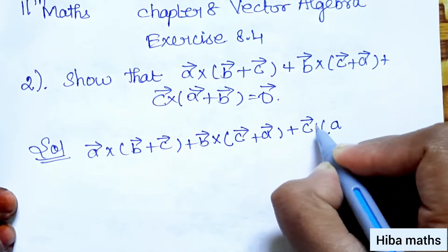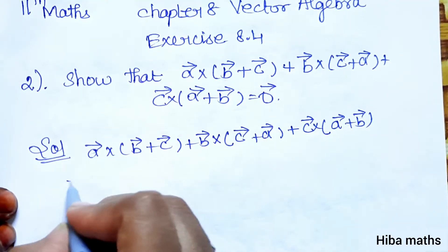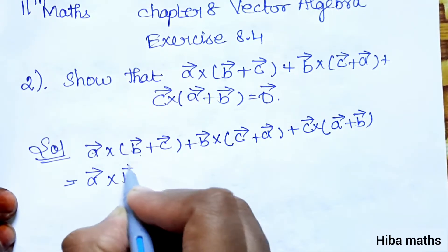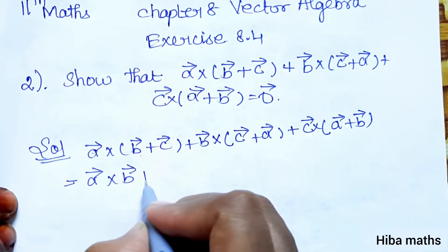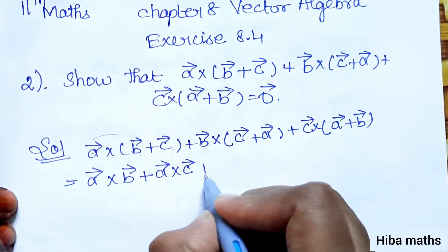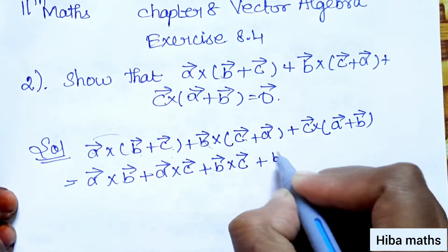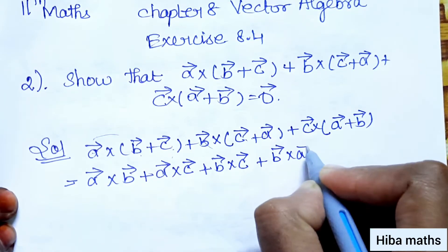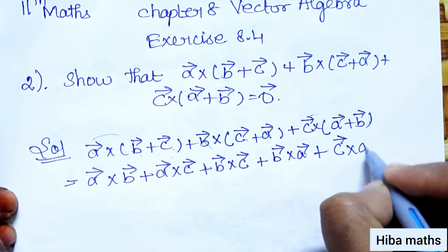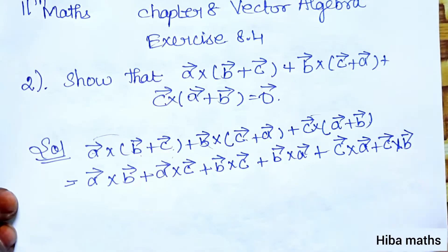This is the LHS. We will expand it using the distributive property: a vector cross b vector plus a vector cross c vector, plus b vector cross c vector plus b vector cross a vector, plus c vector cross a vector plus c vector cross b vector.